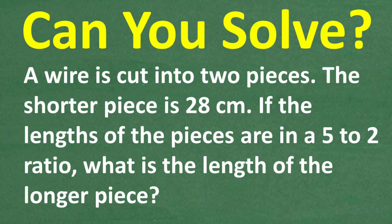A wire cable is cut in two pieces. The shorter piece is 28 centimeters. If the lengths of the pieces are in a 5 to 2 ratio, what is the length of the longer piece?